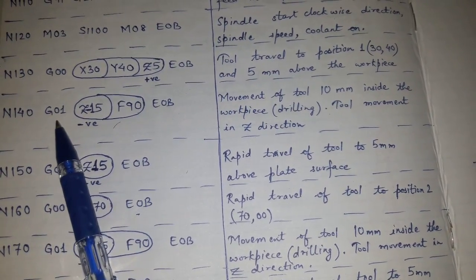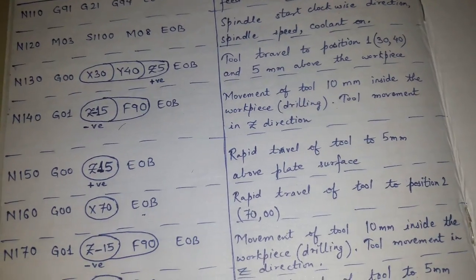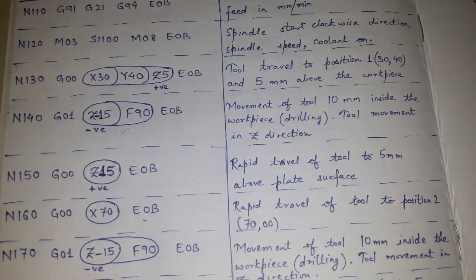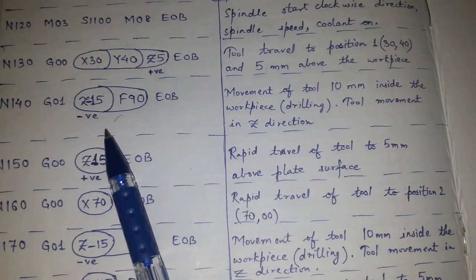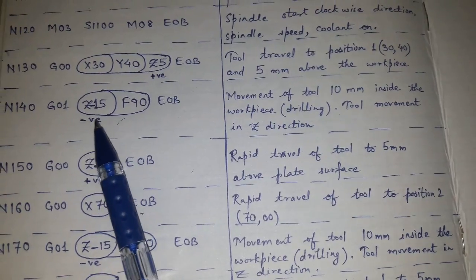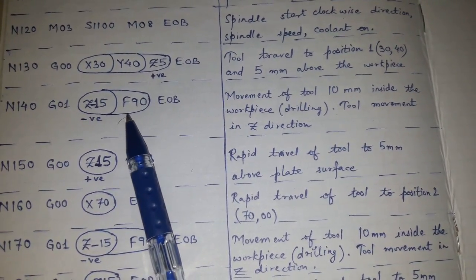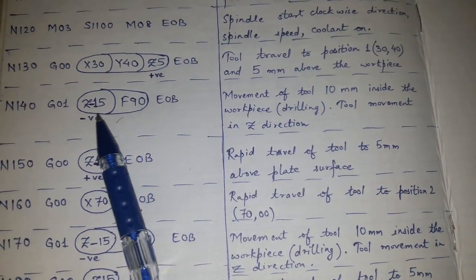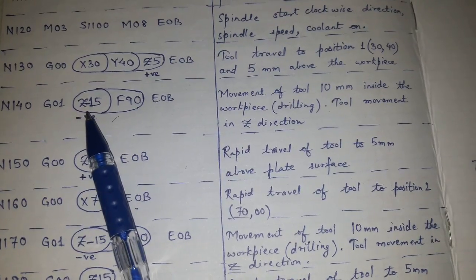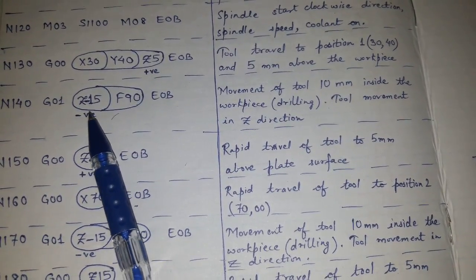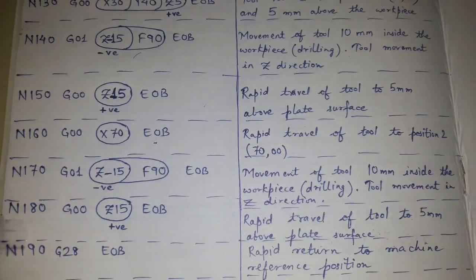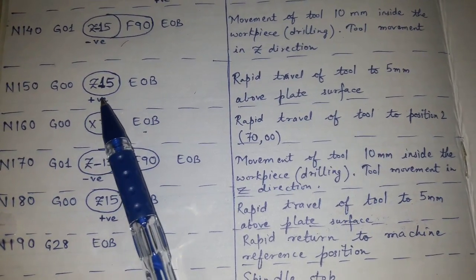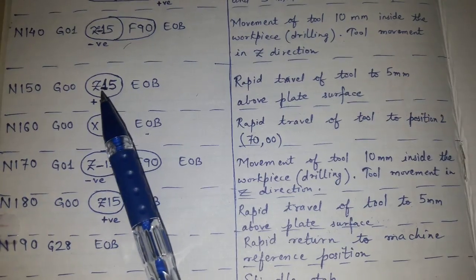N140 is G01 for linear interpolation with Z minus 15. Since the tool is 5 mm above the workpiece and needs to drill 10 mm through it, total movement is 5 plus 10 equals 15 mm, so Z minus 15. Feed is F90. End of block. N150 is G00 Z15 — positive — to retract the tool back 5 mm above the workpiece surface.